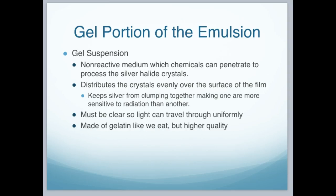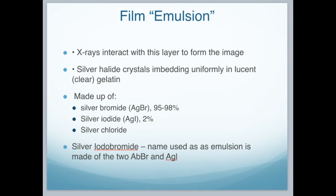There's a gel suspension that holds this emulsion. It's a non-reactive medium through which the chemicals can penetrate and process the silver halide crystals. The gel is inert and non-reactive. It distributes the crystals evenly over the surface of the film, and this keeps the silver from clumping together, making one area more sensitive to radiation than others. It must be clear so light can travel through it uniformly, made of gelatin like we eat but just a higher quality, more dense. X-rays interact with this layer to form the image.